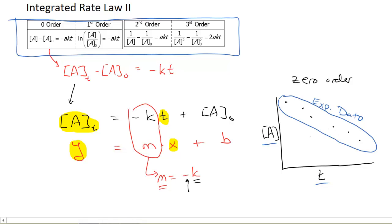And here's the beauty. It's only going to be linear. I'm only going to get a line, y equals mx plus b, if my data is that order.